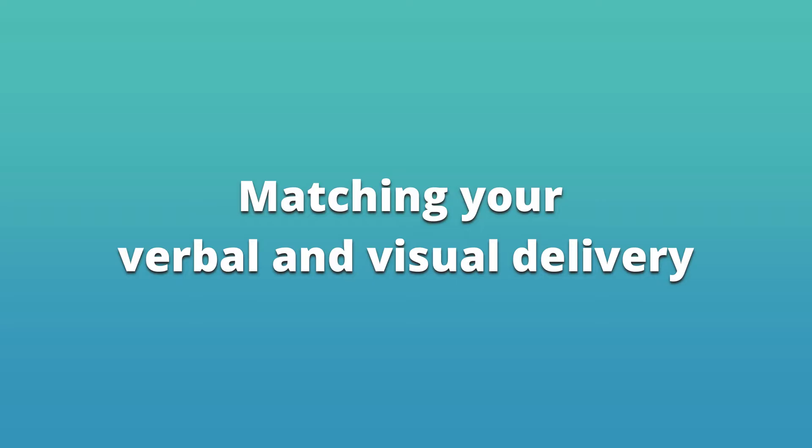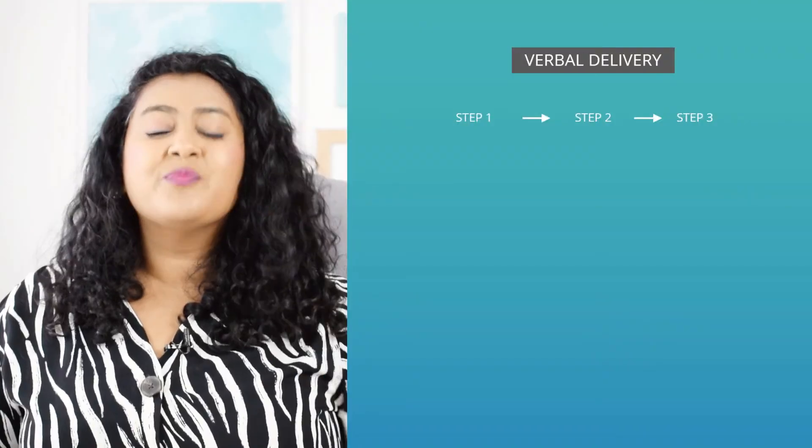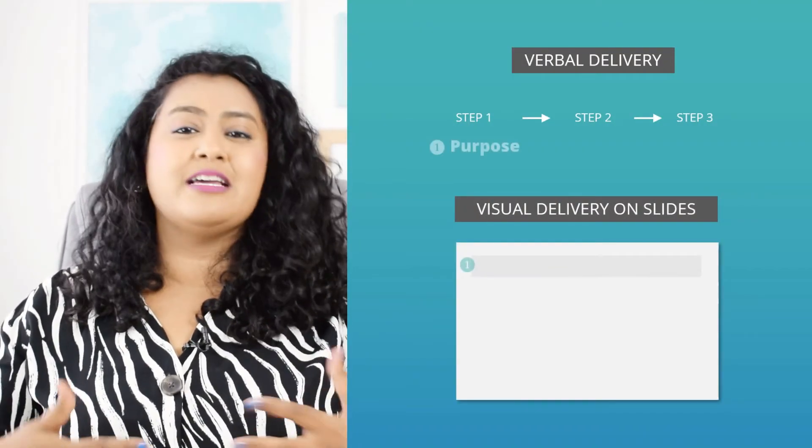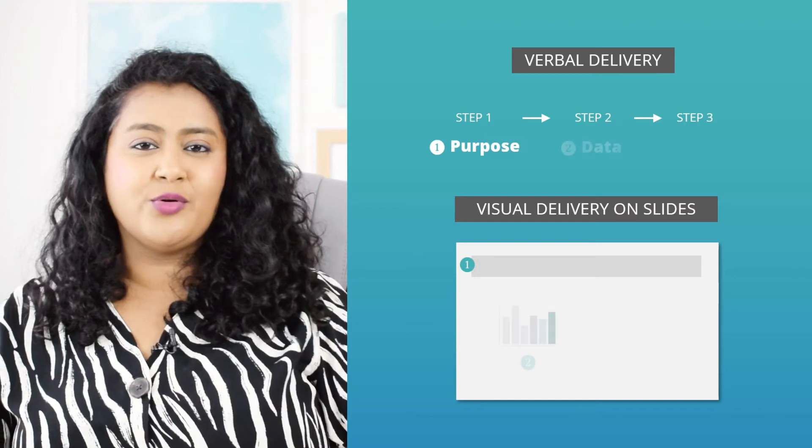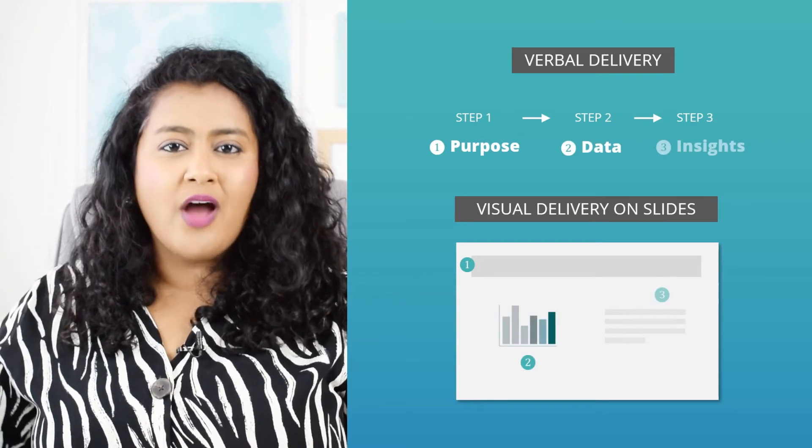I have a power tip for you. When you tell your data story, you want to match your verbal delivery with the information you display on your slides. The last thing you want is to cram a lot of information on your slides, because your audience will then start reading off your slides instead of listening to you. We want them to listen to our beautifully crafted data story. So as you advance from step one to step two, step two to step three, you want to reveal information one by one on your slides. By doing so, your verbal delivery matches your visual delivery and you look like a total pro when you communicate.